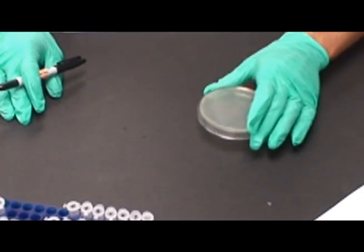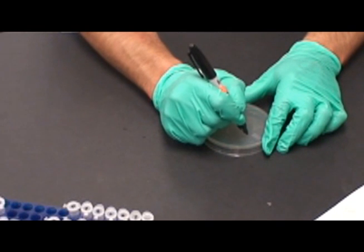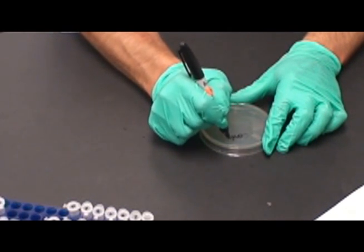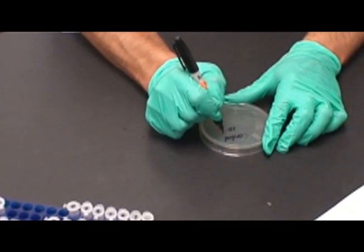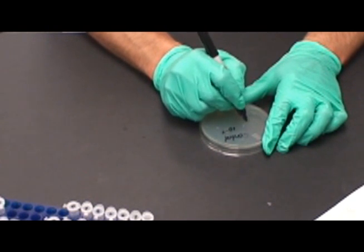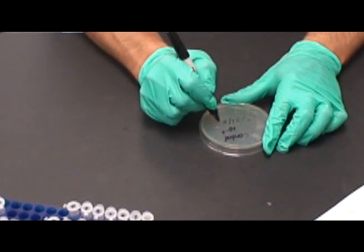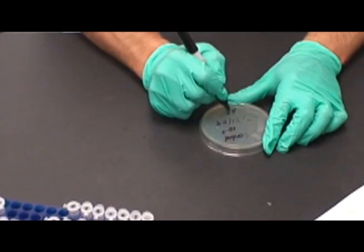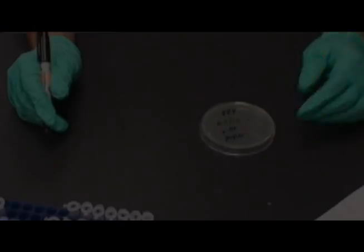Once the dilutions are complete, label the 15 LB agar plates, as shown in the lab procedure. Make sure to include your initials, the date, the flask name, and the dilution on the label. Do not label the cover of the plate, as these can be separated from the bacteria.